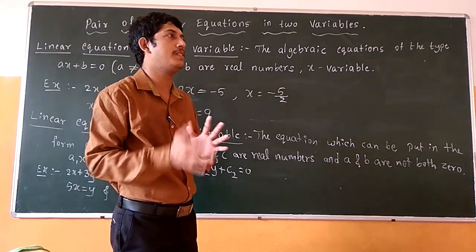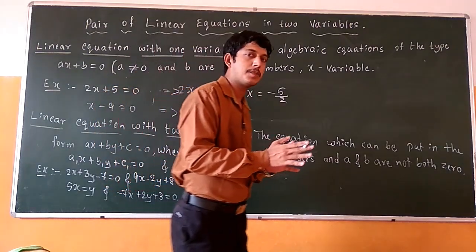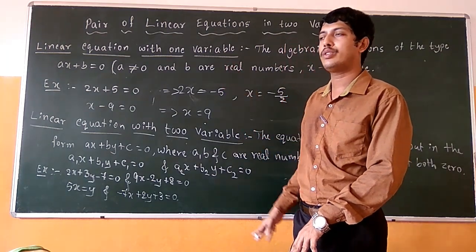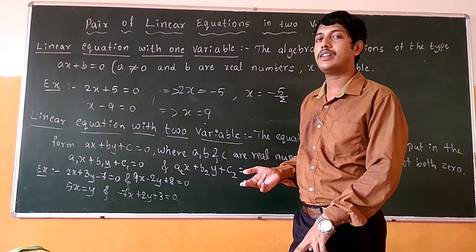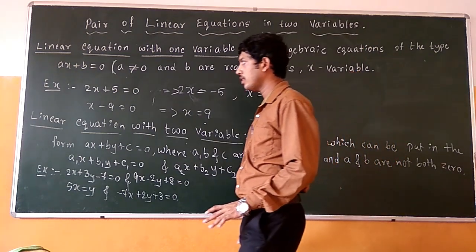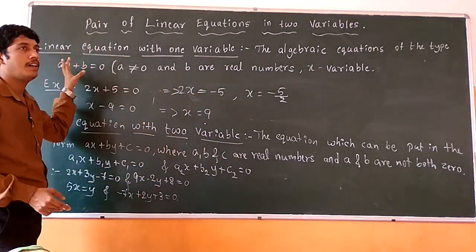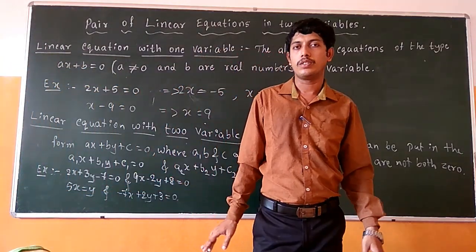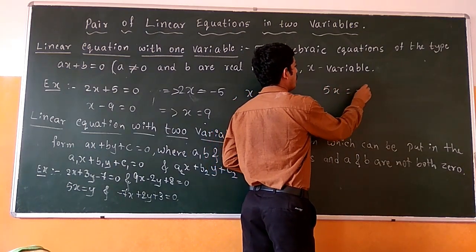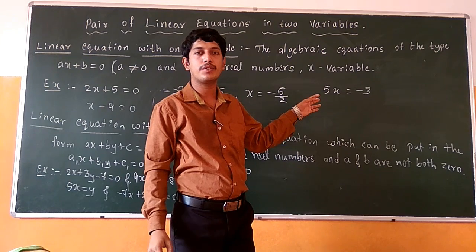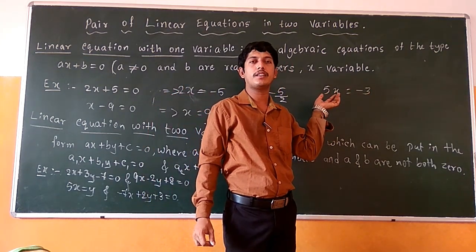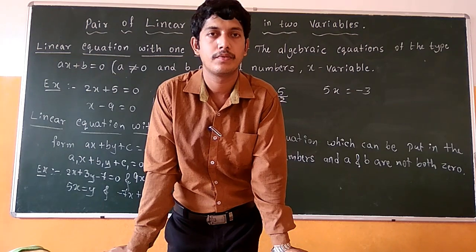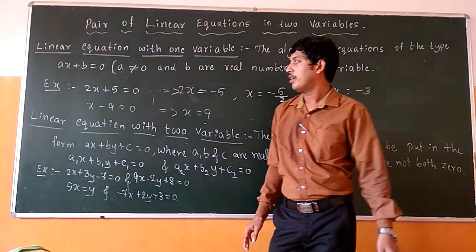These are the two problems which show how to find out the solution of the linear equation in one variable. Linear equation in one variable means the equation which is in the form of ax plus b equals to 0, where a and b are real numbers and a is not equal to 0. Based on this general formula, we can write any number of examples, like 5x equals to minus 3, which is also one equation.